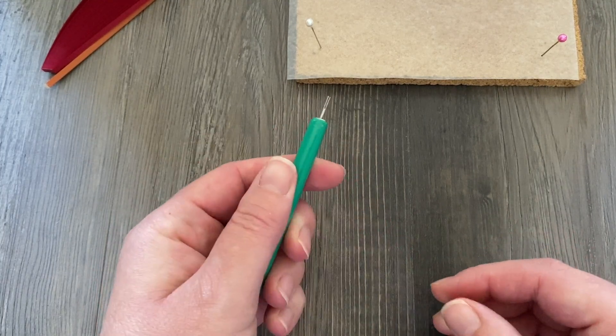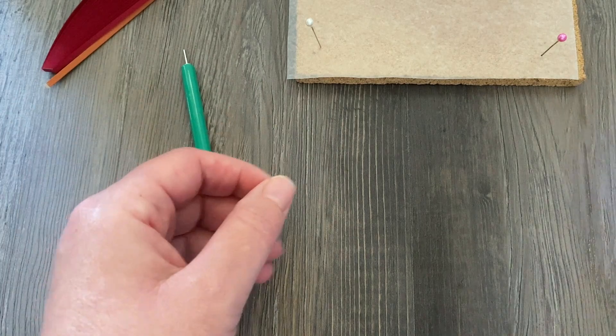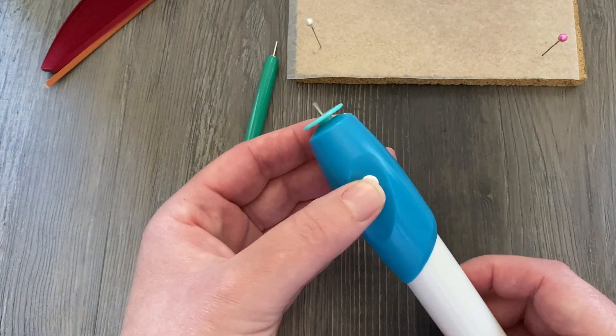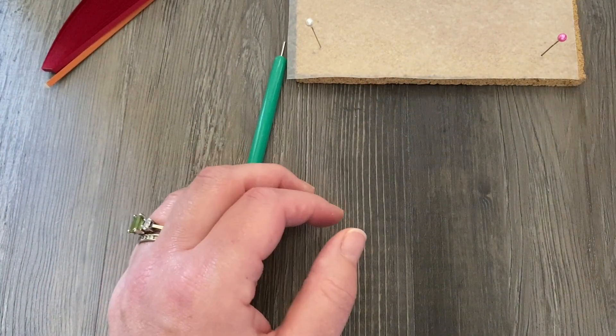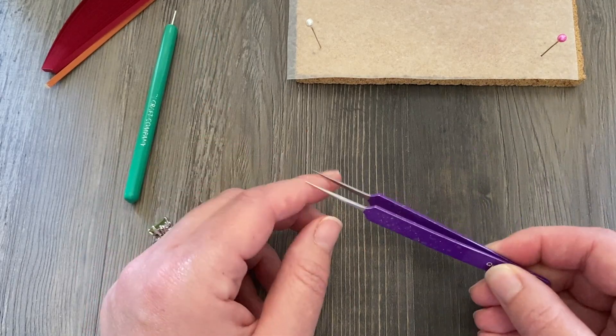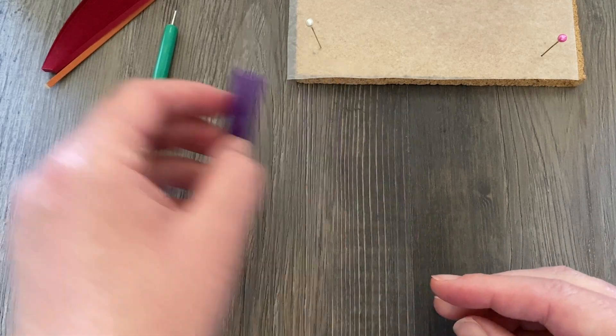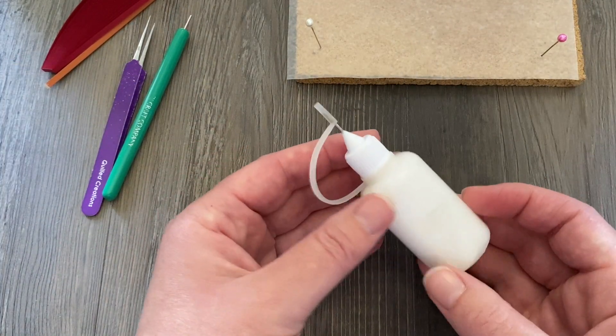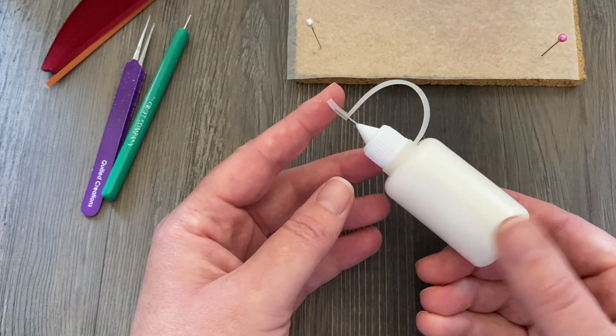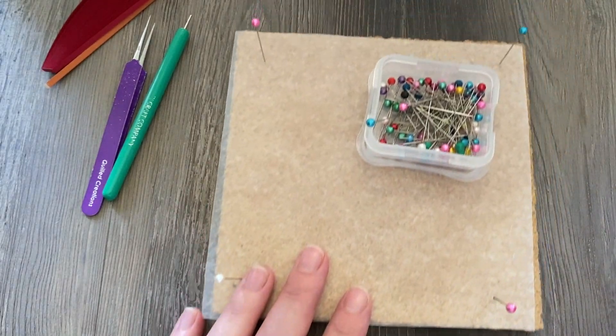I'm going to be using a slotted tool for all of these. You can use a needle tool if you want to, or an automatic quilling tool. Tweezers may come in handy when you're putting these flowers together. For glue I'm just using Elmer's Glue All in my needle nose bottle.